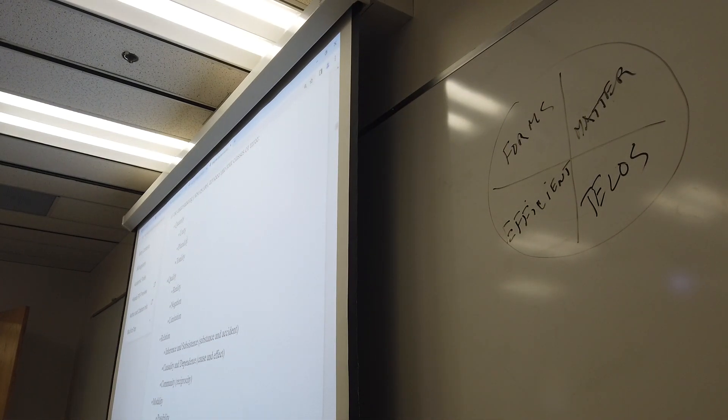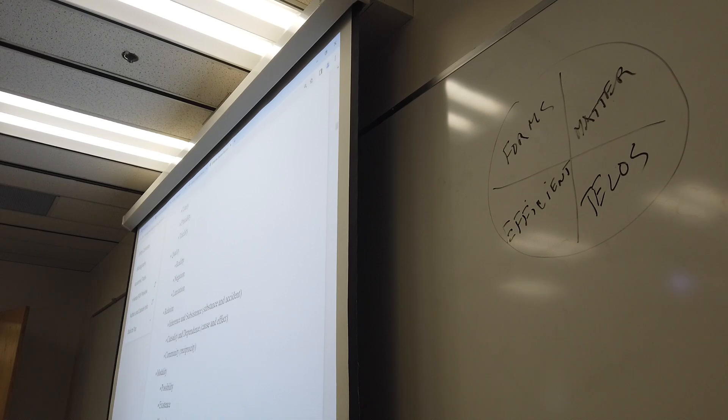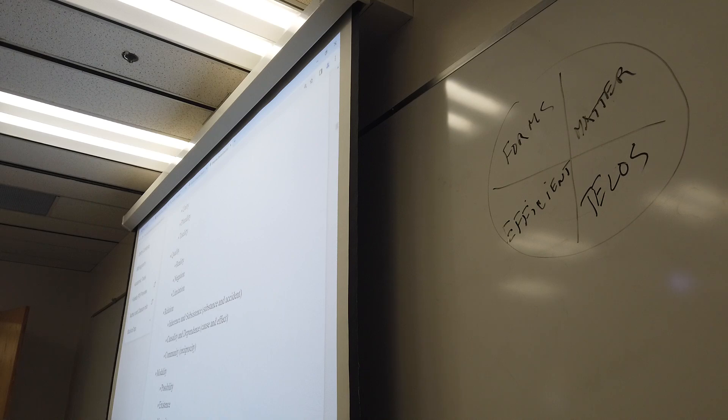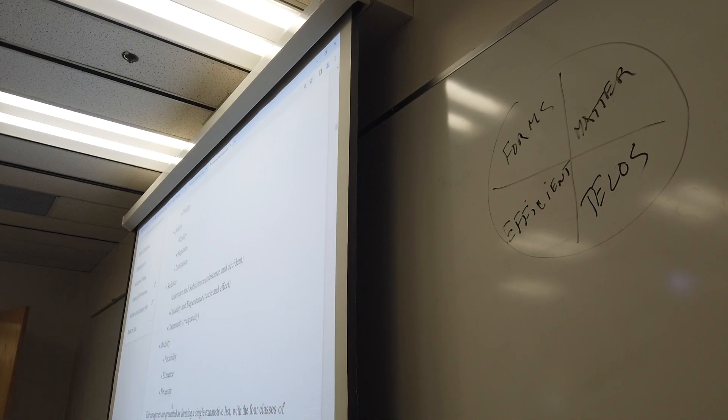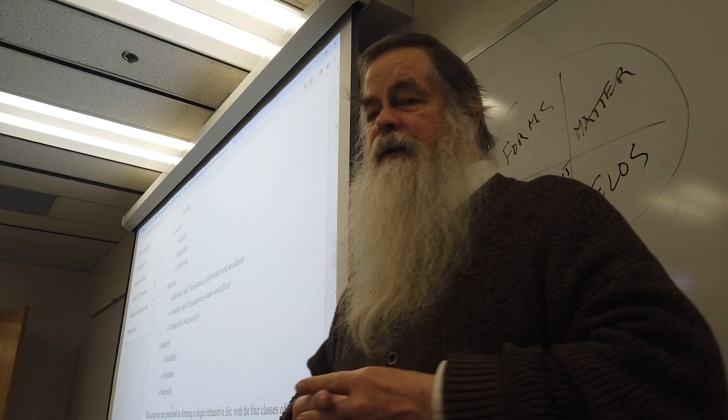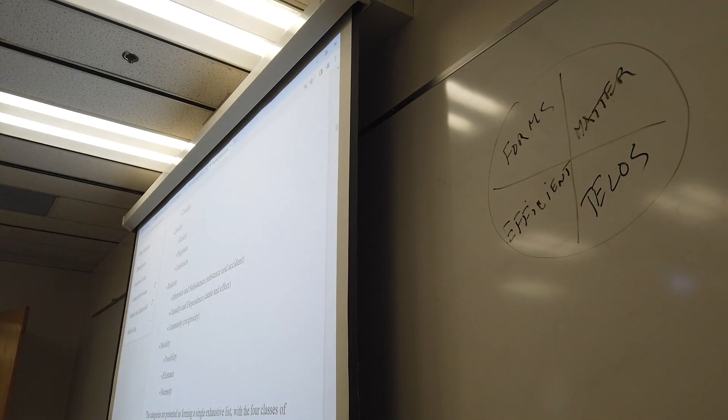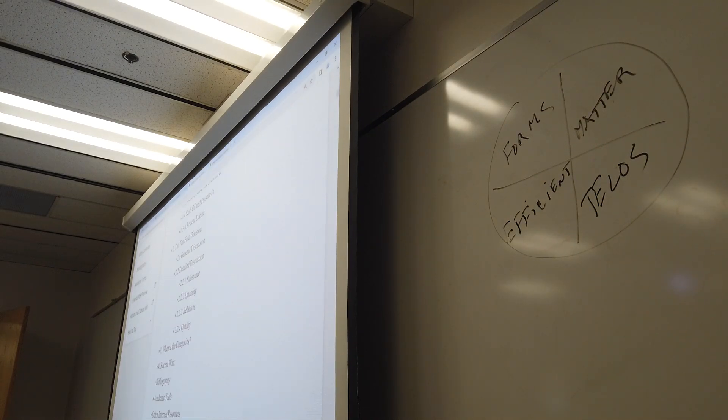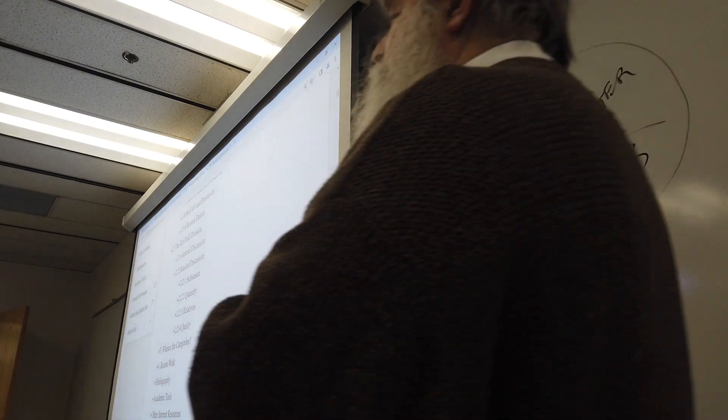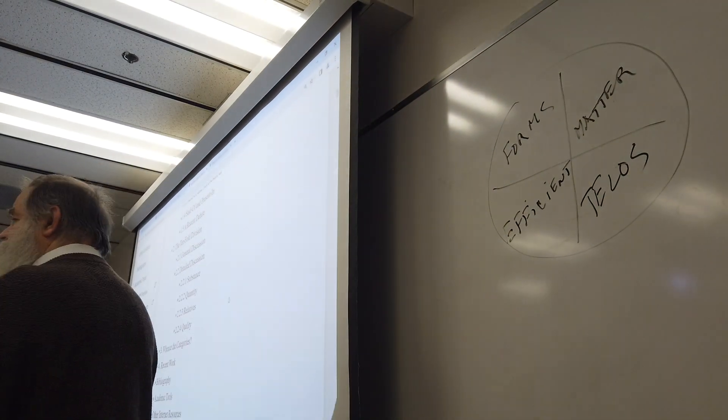You get 12 categories instead of 10. And you get quantity broken up into these three, quality broken up into these three, relations broken up into these three, and modality broken up into those. So there will be a shift at that time.